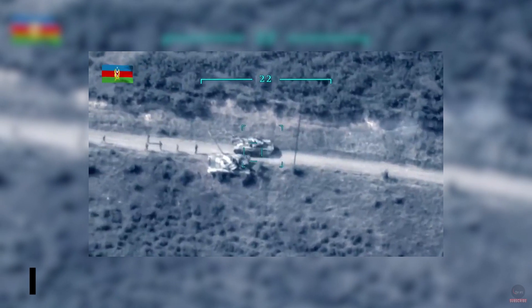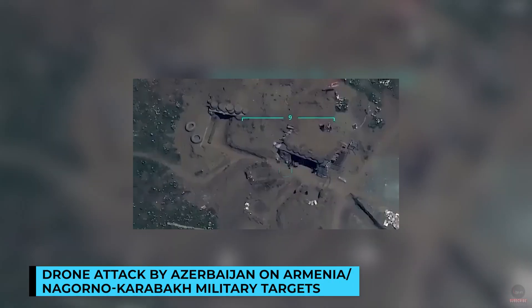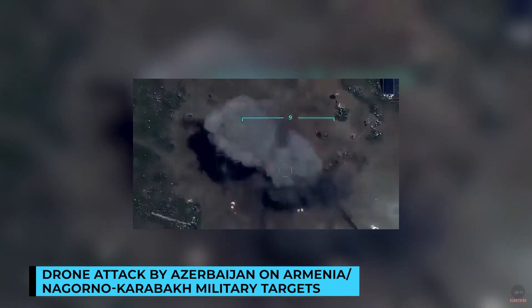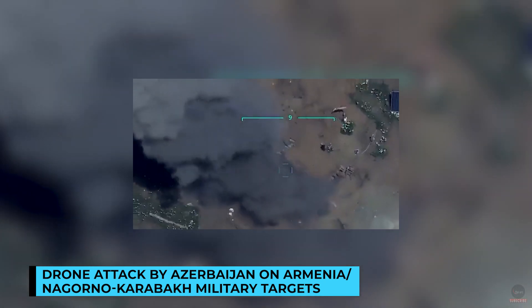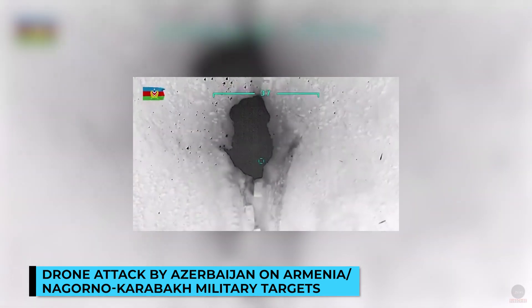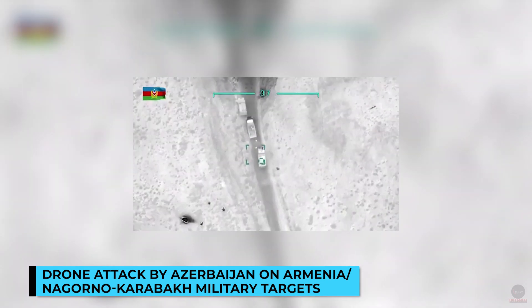The second Nagorno-Karabakh war started on 27 September 2020. The conflict saw use of all kinds of weaponry, starting from heavy artillery, helicopters, missiles, and drones. The conflict saw extensive use of drones, especially by the Azerbaijani side. Azerbaijan deployed Turkish Bayraktar TB2 drones and Israeli loitering munitions to destroy tanks and military targets of Armenia and Nagorno-Karabakh.